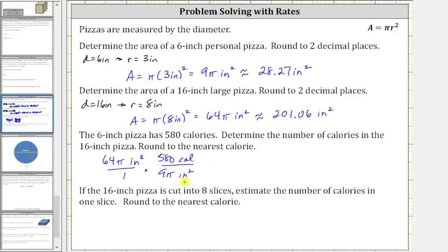By multiplying by this rate, the units of square inches divided by square inches simplify out, leaving us with calories. Multiplying, we have 64 pi times 580 in the numerator, and nine pi in the denominator. Pi divided by pi simplifies to one, but we'll evaluate this on the calculator. The important thing to recognize is that the units are now in calories.